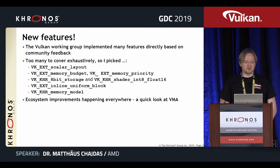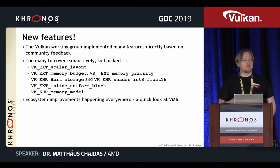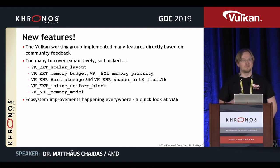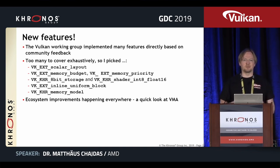We've done many extensions over the last years, and I'm going to cover a selected set here — roughly what I can cover in 15 minutes. This will be partially about how to improve compiler stuff, how to improve memory handling, how to provide more flexibility to developers, and one hidden hero — an extension you should never see in practice but which provides an incredible amount of value. I'll also briefly touch on ecosystem improvements happening outside direct spec updates, including VMA.